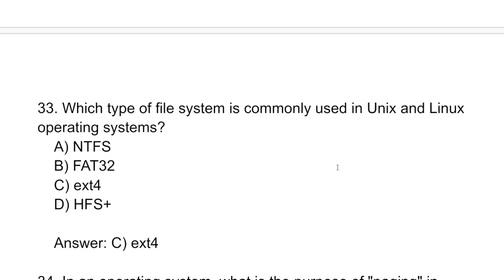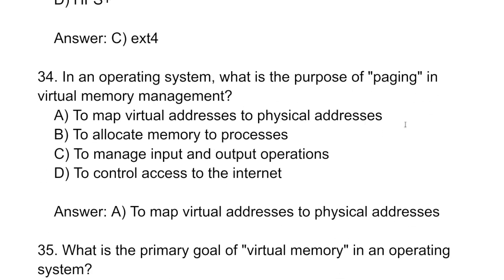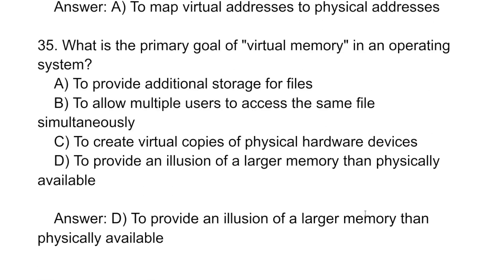Which type of file system is commonly used in UNIX and Linux? That is EXT-4. EXT-4 is used for UNIX/Linux, NTFS is used for Windows, HFS Plus is used for Mac, and FAT32 is also common. In virtual memory management, what is the concept of paging? Paging provides an illusion of larger memory than is physically available.